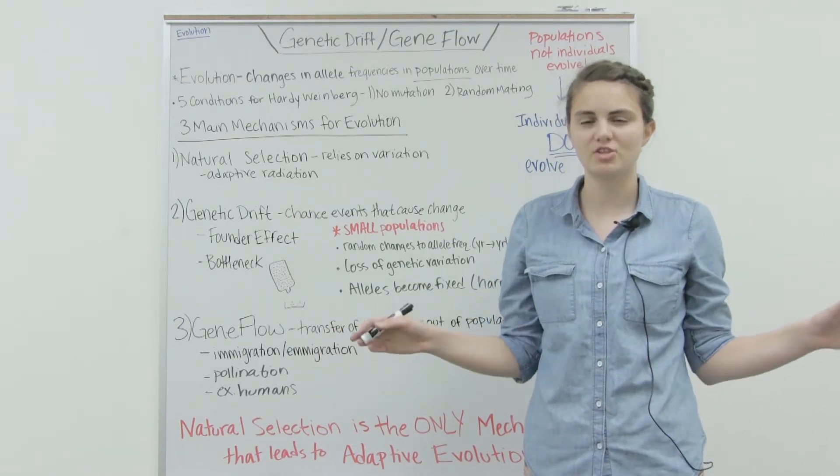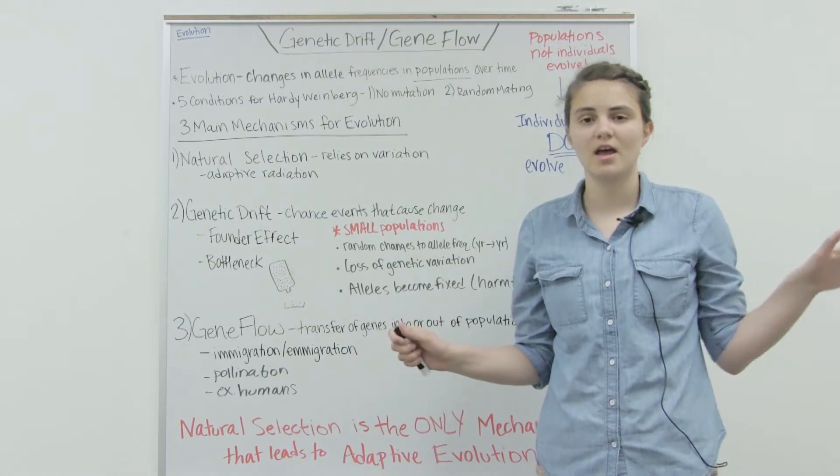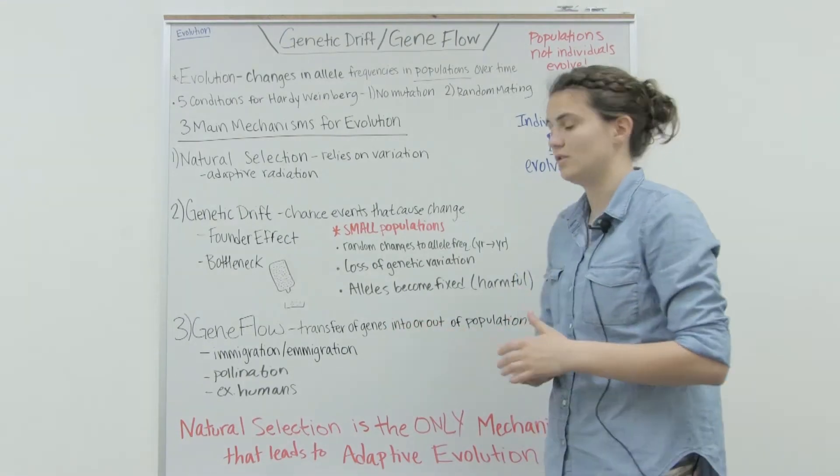An example of this is pollination. If you have two separate populations of flowers, but there is some pollinator that is transferring genes from one population to the other, that's also gene flow.